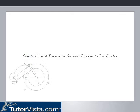Construction of transverse common tangent to two circles. Given two circles with centers A and B and radii R1 and R2 respectively, where R2 is greater than R1. To construct a transverse common tangent to the two given circles.